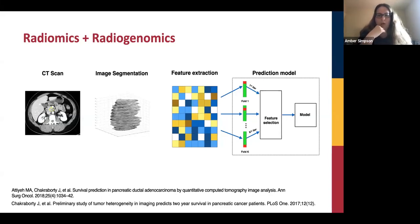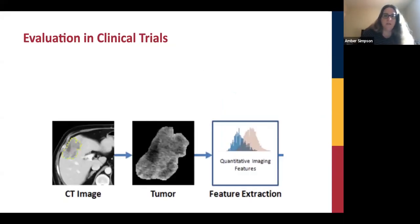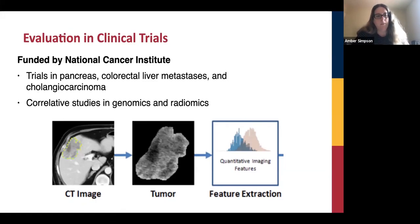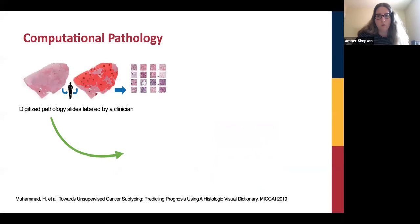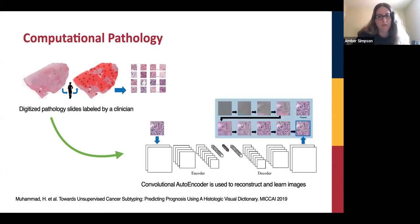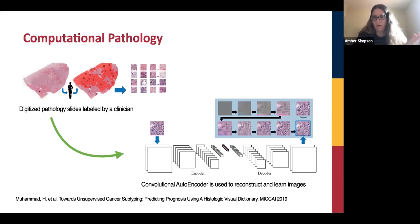My lab does a lot of work in the radiomics or radiogenomics space — the idea that you can take a CT or MRI scan, extract features from it, and create predictive algorithms for what to do with patients. We are evaluating these ideas in clinical trials, currently open in pancreas cancer, colorectal liver metastases, and cholangiocarcinoma, a rare aggressive primary liver cancer. We also do work in computational pathology, taking digital pathology slides to define new patterns of cancer and look at subtypes.